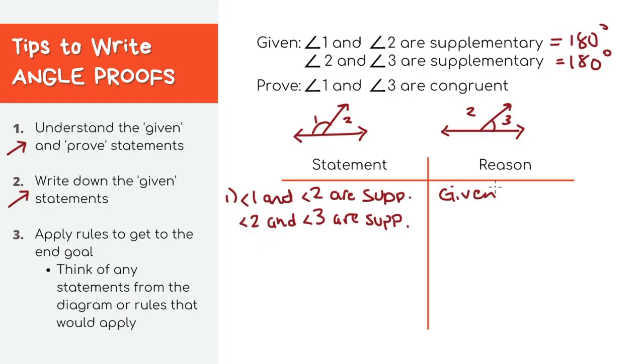We've already established that supplementary angles add up to 180 degrees, right? So let's make that official and write it down. The measure of angle one plus the measure of angle two equals 180 degrees.